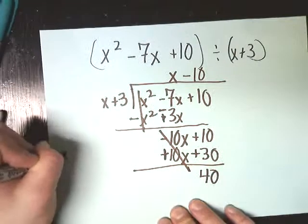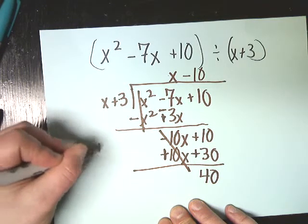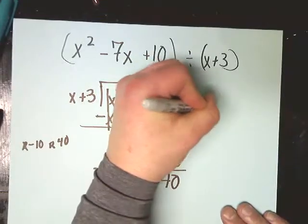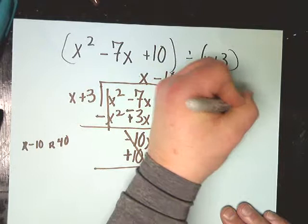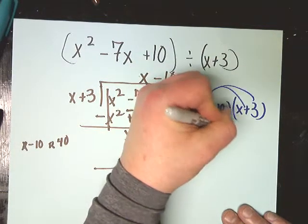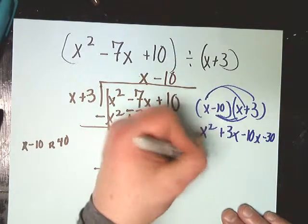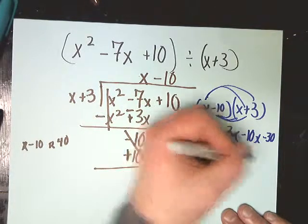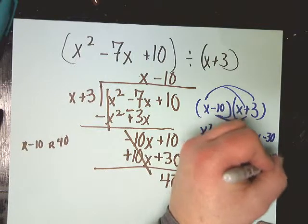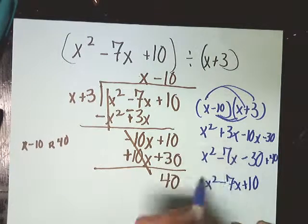So, let's test it. This should be our answer. Our answer should be this. x minus 10 with a remainder of 40. So, let's go back and do x minus 10 times x plus 3. So, you get x squared minus 7x minus 30. But I'm trying to get to plus 10. Well, that's where that 40 comes in. Negative 30 plus 40 gives me that positive 10 that I wanted.